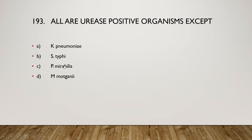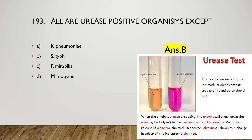Next question: all are urease-positive organisms except Klebsiella pneumoniae, Salmonella typhi, Pseudomonas mirabilis, or M. morganii? The right answer is option B, Salmonella typhi is not a urease-positive organism. In the urease test, the organism is cultured in a medium containing urea and the indicator phenol red. When bacteria produce urease, the enzyme breaks down urea to give ammonia and CO₂. The ammonia makes the medium alkaline, shown by a color change to pink-red — a positive urease test.